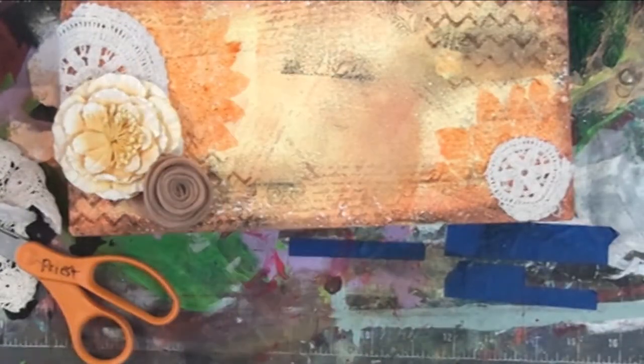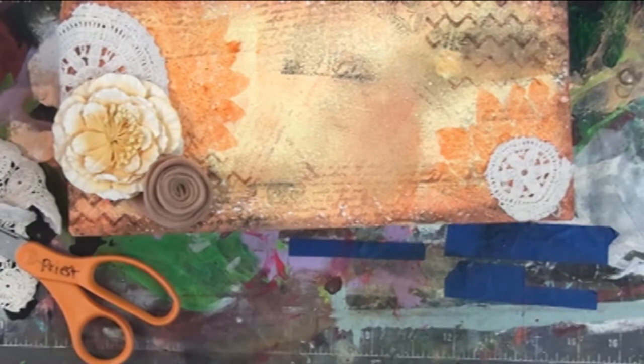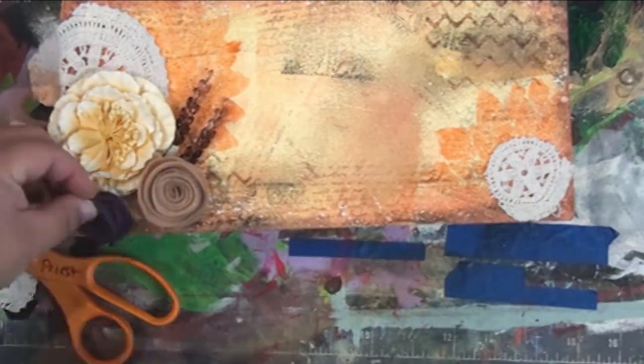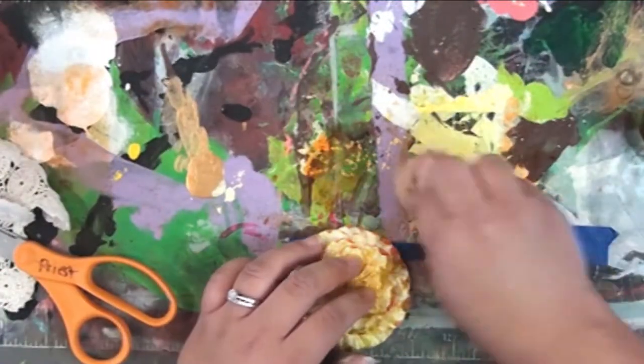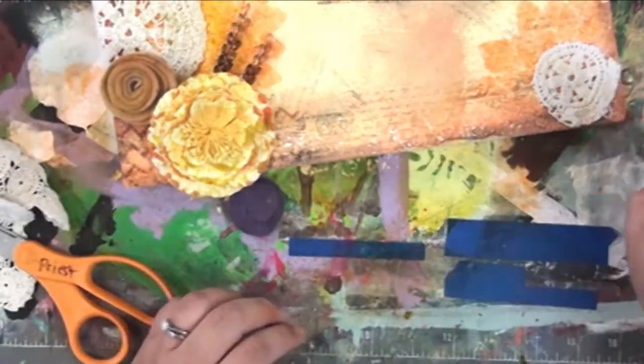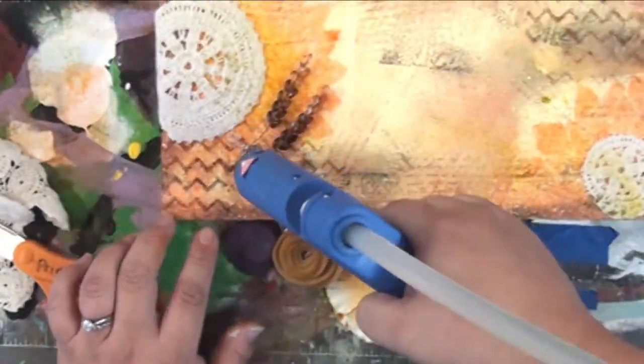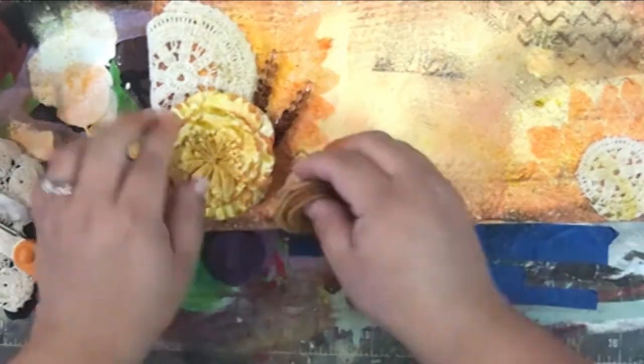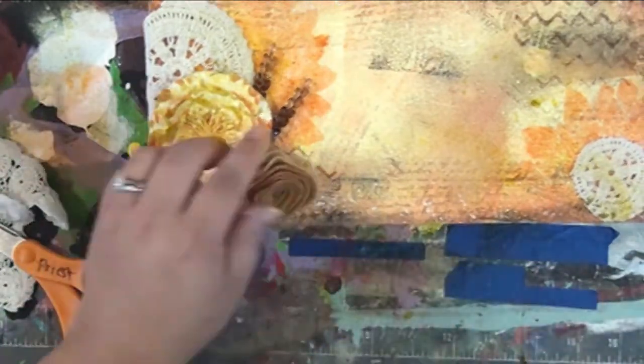People aren't going to know this is foam until they get right up on top of it. I'm also using some flowers. I have some felt flowers I made, some beaded sprays, and I'm using some spray ink to just make that all blend together. Give it a little bit of an antique-y, vintage-y, weathered look.